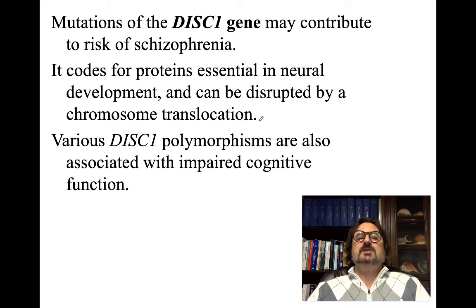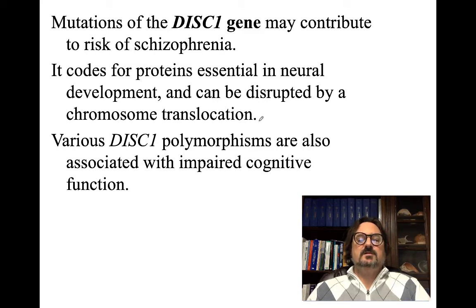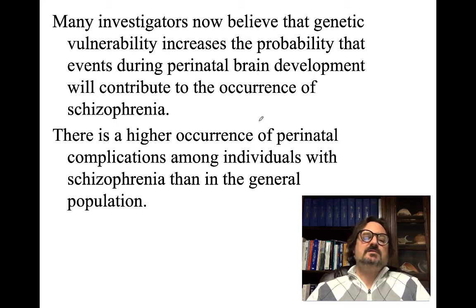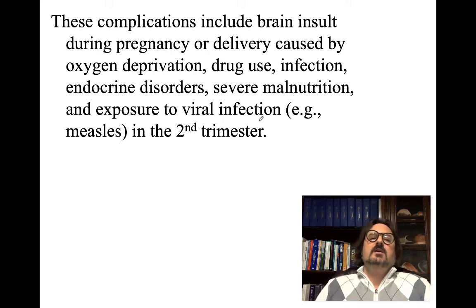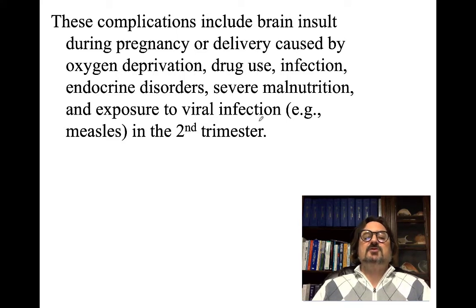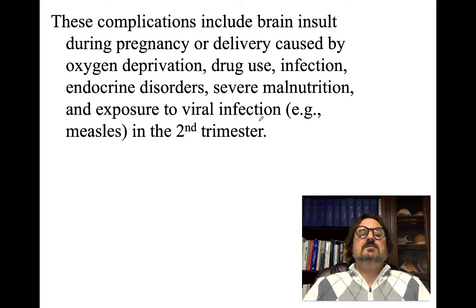Mutations of the DISC1 gene may contribute to risk of schizophrenia — it codes for proteins essential in neural development and can be disrupted by chromosome translocation. DISC1 polymorphisms are also associated with impaired cognitive function, which again is something we find in schizophrenia. Many investigators now believe that genetic vulnerability increases the probability that events during perinatal brain development will contribute to the occurrence of schizophrenia. Perinatal complications among individuals with schizophrenia are higher than in the general population, including brain insult during pregnancy or delivery related to oxygen deprivation, drug use, infection, endocrine disorders, severe malnutrition, or exposure to viral infection such as measles — typically in the second trimester.